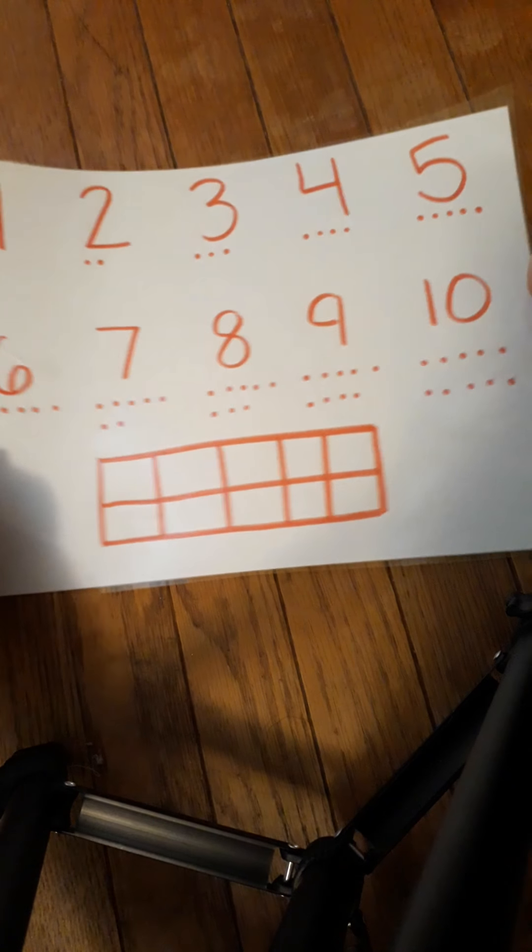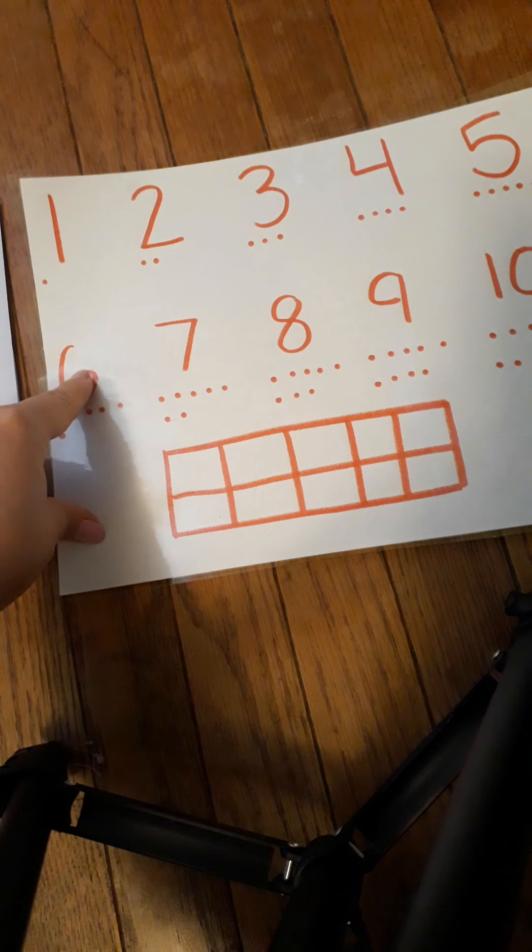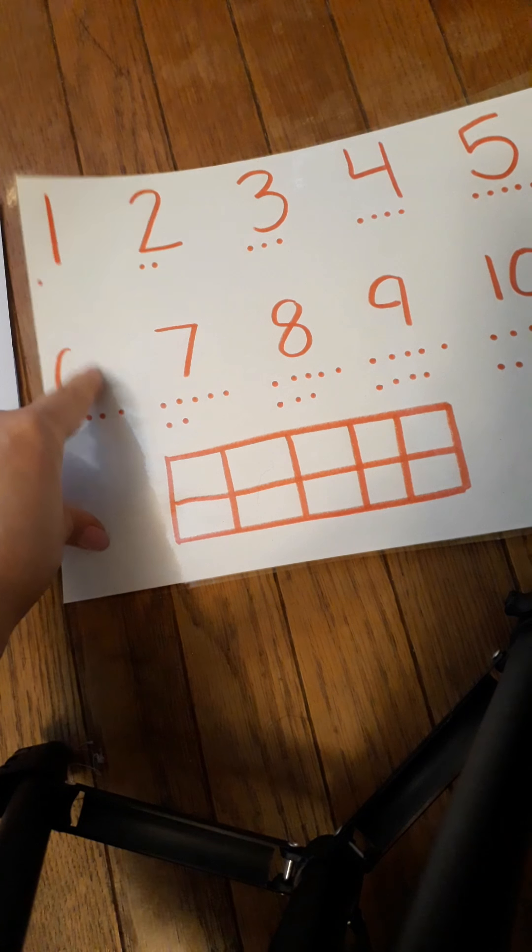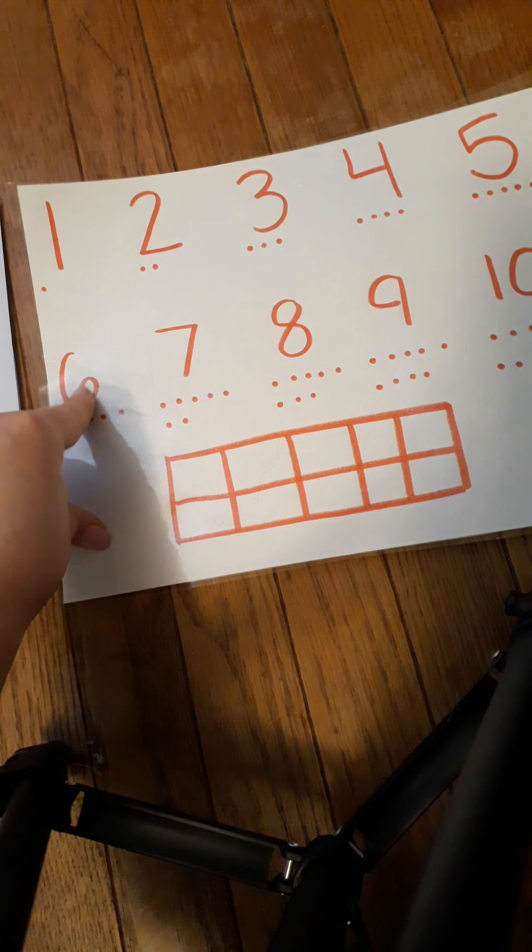If you have any dry erase markers at home, you can also try and write it. Or if you have any paper at home, you can try and practice it on your paper. You can practice it here on your ten-frame making a six. This one is a small one, so you can practice doing tiny little numbers, more like numbers that you would write.